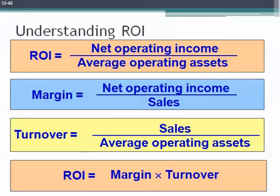DuPont pioneered the use of ROI and recognized the importance of breaking down and looking at the components of ROI — namely our profit margin and our asset turnover. ROI is net operating income divided by average operating assets. Our profit margin, sometimes referred to as margin, is net operating income divided by sales. Asset turnover is a measure of how efficient we are at using our assets to generate sales, and it's sales divided by average operating assets. If we multiply profit margin by asset turnover, we get our ROI.